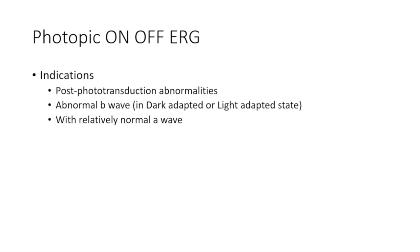Coming to extended protocols: when we do a full field ERG, we get a broad outline about entire retinal function. At least 20% of the retina must be affected for a full field ERG to show differences in waveforms. These extended protocols are aimed at further localizing the lesion. For example, if only B waves are abnormal with a normal A wave, we can localize to bipolar cells — extended protocols give more specific information about retinal function.